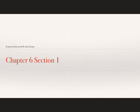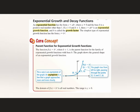Alright, so we're moving on to chapter 6. 6.1 deals with exponential growth and decay. For exponential growth and decay functions, an exponential function has the form y is equal to a times b raised to the power of x. That x is in our exponent — that's what makes it an exponential function.